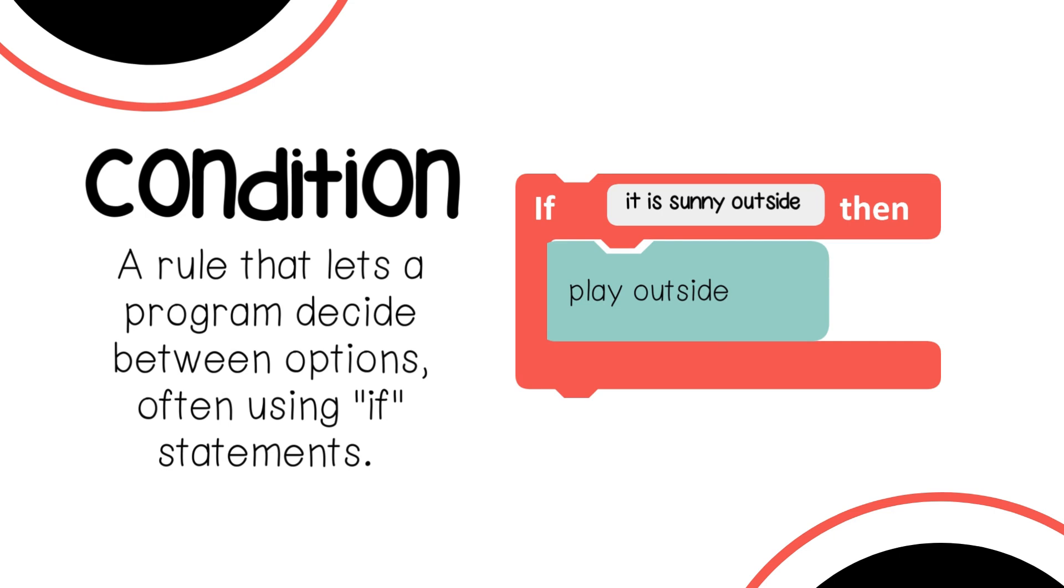Condition. A condition is a rule that lets a program decide between options, often using if statements, like if it's sunny outside, then play outside.